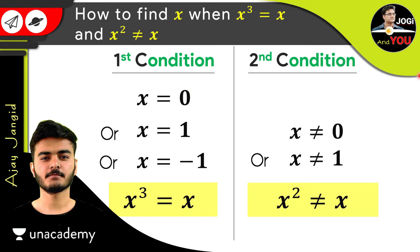So x = 0 is rejected. The second value from the first condition is x = 1, but the second condition says x cannot be 1. So it's also creating a contradiction — x can be 1 or x cannot be equal to 1 cannot both be true at the same time. So we reject x = 1 as well.